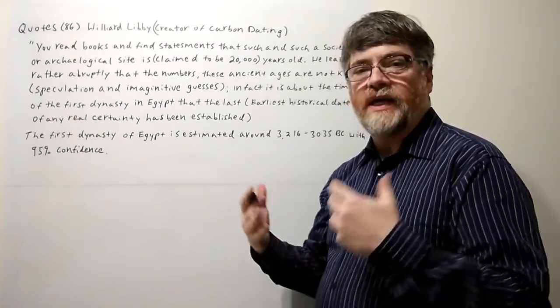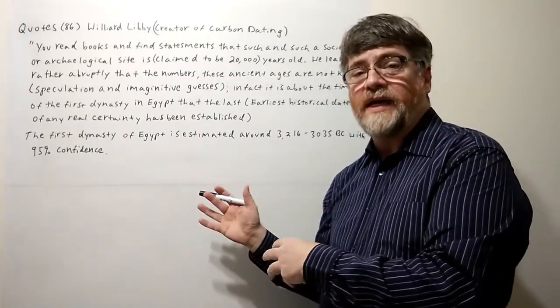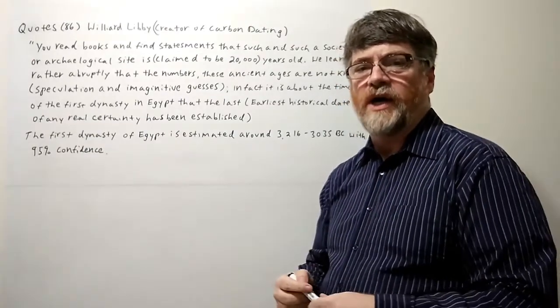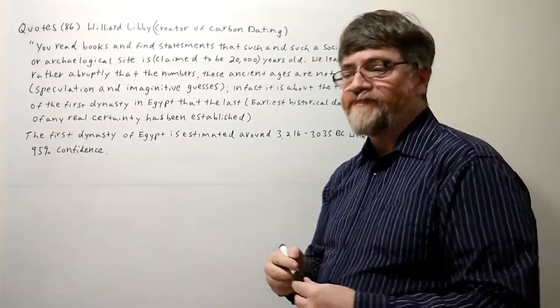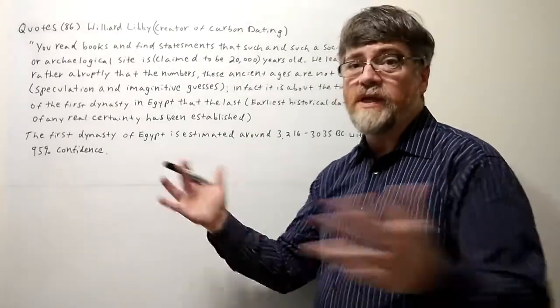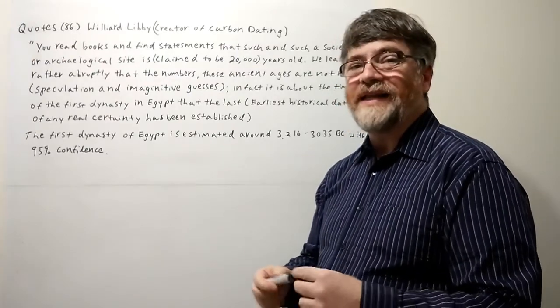Once you start studying carbon dating, you find out that when they do these tests, they come up with a lot of numbers. They'll test something and get like 10 different numbers. Whoever's writing the paper just chooses the number they like best. Those numbers can vary a lot, so it's not really as exact.